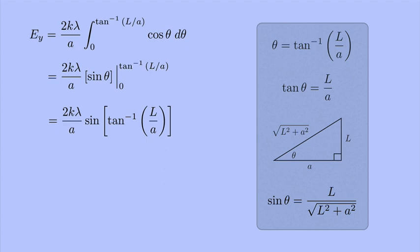Now I can plug that in, and I get the final answer: 2k lambda L divided by a times the square root of L squared plus a squared.